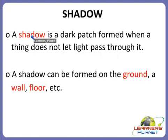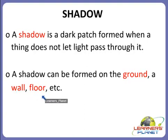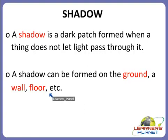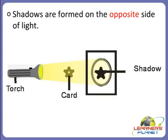Always remember that a shadow can be formed on the ground, a floor, a wall, and also at many other places. A shadow can be formed on the ground, a wall, and a floor. Shadows are always formed on the opposite side of light.